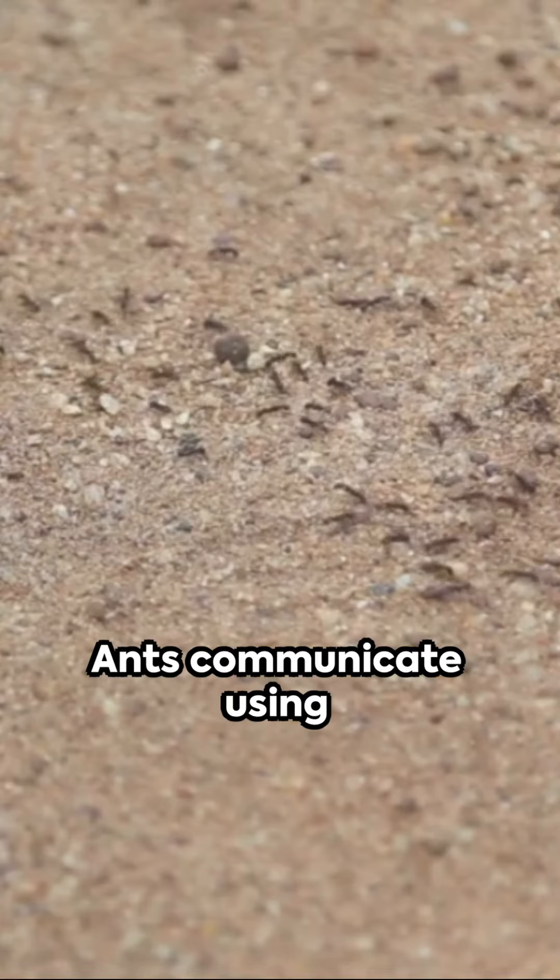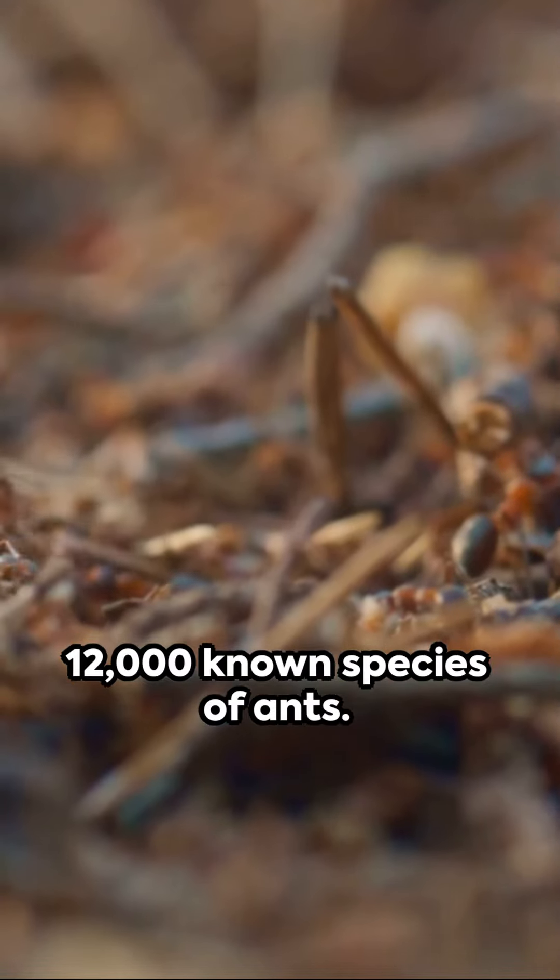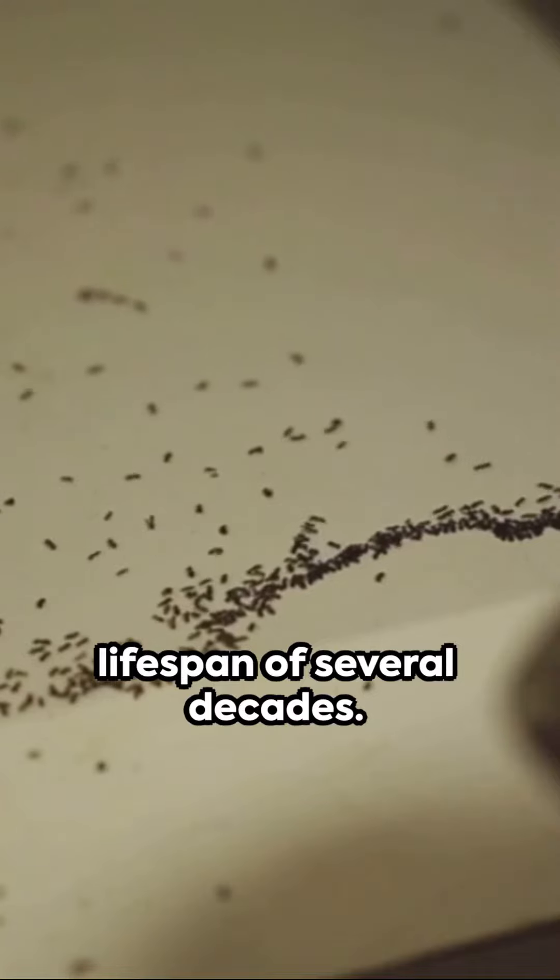Ants communicate using chemicals called pheromones. There are more than 12,000 known species of ants. Some ants have a lifespan of several decades.